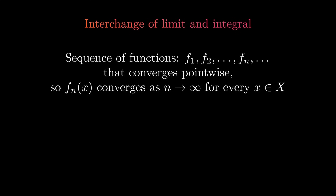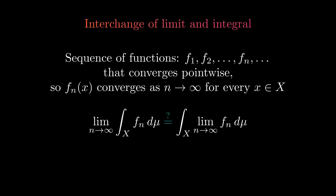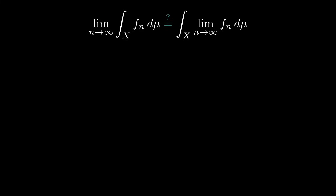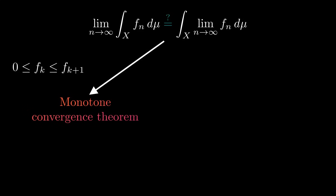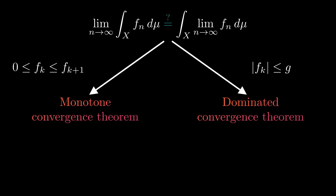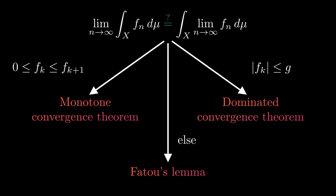One of the major advantages of the Lebesgue integral over the Riemann integral is better behavior with limits. We often encounter situations where we want to interchange a limit and an integral: given a sequence of functions which converges pointwise, we want to interchange the limit and the integral. Unfortunately, this is not generally possible, but there are some theorems which give conditions under which it is. The two most important are the Monotone Convergence Theorem, which assumes the sequence of functions is non-negative and non-decreasing, and the Dominated Convergence Theorem, which assumes the sequence of functions is dominated by an integrable function. If these two theorems don't apply, we can always use Fatou's Lemma, which gives an upper bound for the value of the integral.